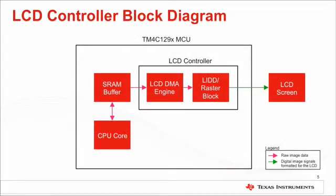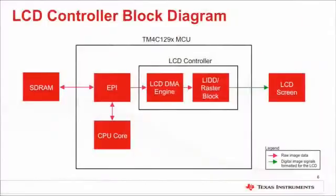As shown on the screen, the LCD controller module is integrated in the TM4C129X devices and has been designed to ease the load on the CPU. The implementation requires the CPU to only write to the SRAM buffer when the image to be displayed changes. The LCD DMA engine will continuously read the image data until the CPU requests it to stop. Since the LCD controller has its own dedicated high-priority DMA engine, it doesn't steal cycles from the micro DMA module. In systems with very limited SRAM, raw image data can be saved in external memory such as SDRAM connected via the Extended Peripheral Interface, also called EPI.